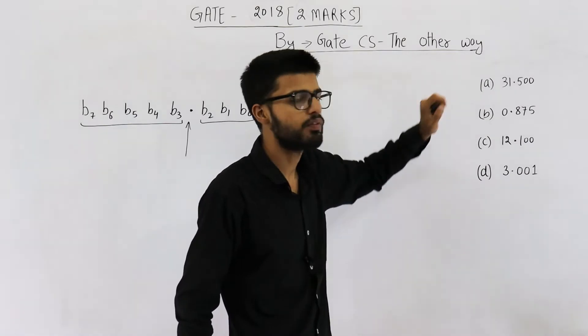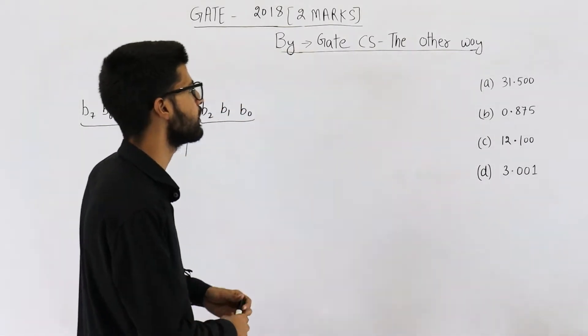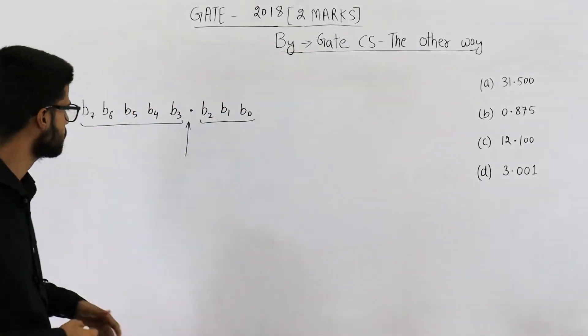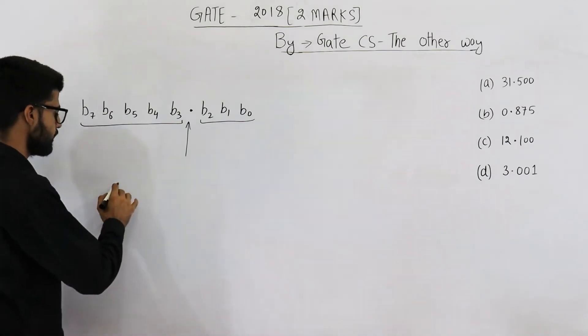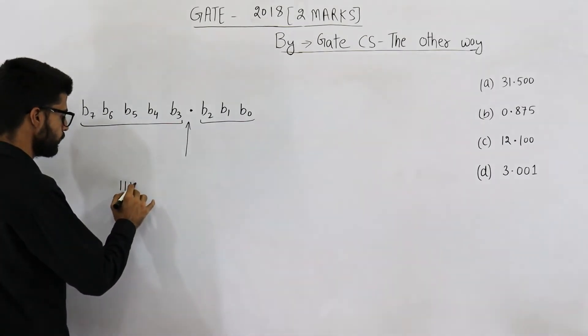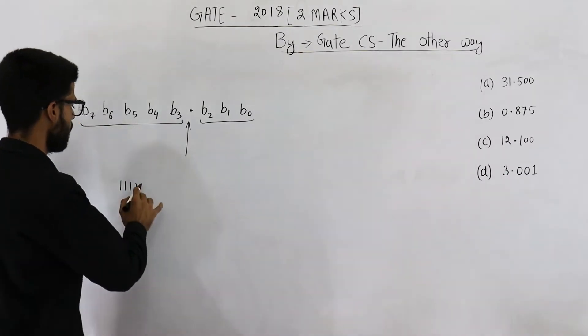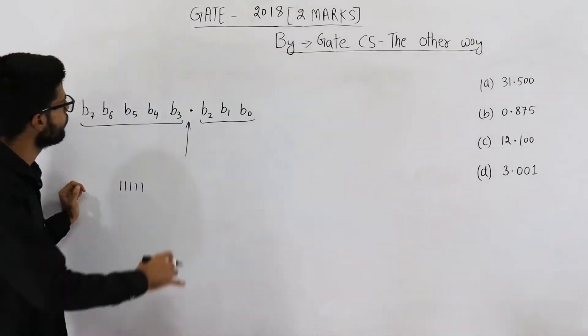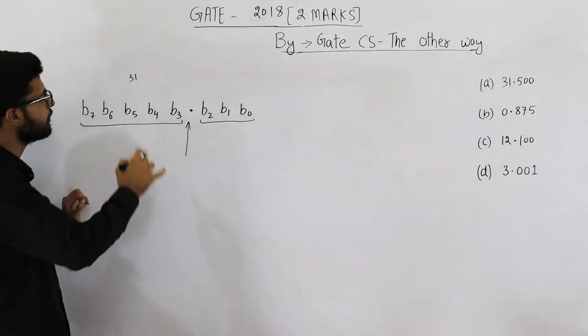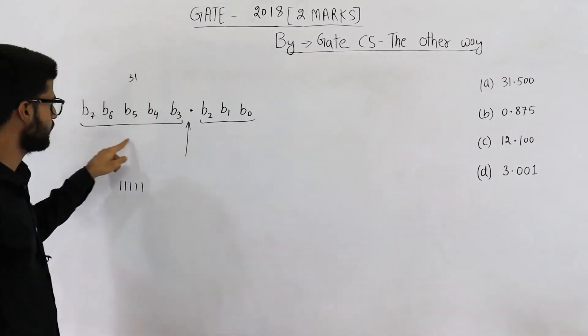First one is 31.5. Can we represent this number in this number system? Let us see. 31 can be written as 1, 1, 1, 1 and 1. So 31 can be represented in 5 bits. 31 can be represented here.